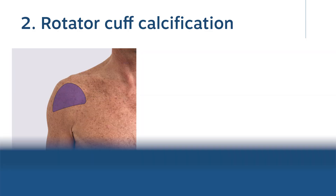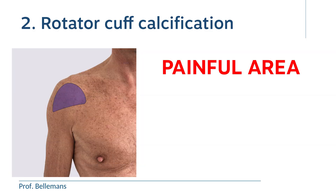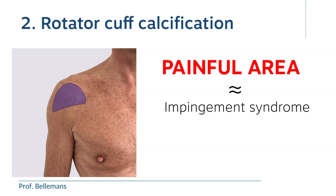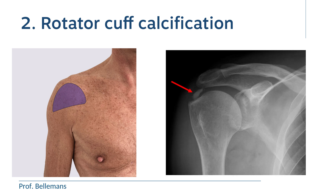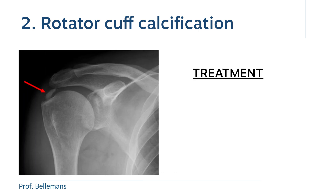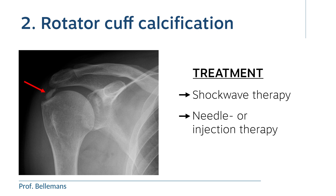Number two: rotator cuff calcification. The painful area is almost the same as in impingement syndrome, but now the pain is somewhat more constant and not so much exacerbated by lifting the arm above the shoulder. The diagnosis is easily confirmed with an x-ray or ultrasound because the calcification is then easily visible. Treatment consists of shockwave therapy to disintegrate the calcification, or this can be done by needle or injection therapy. Sometimes keyhole surgery may be needed for removal of the calcification.